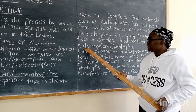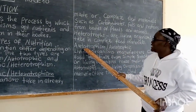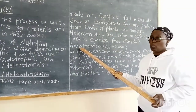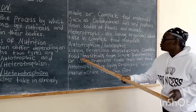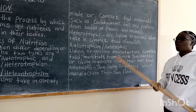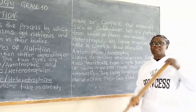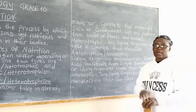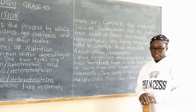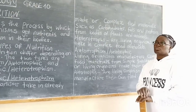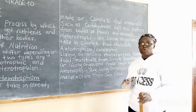The second category is autotrophism. This is also a way or a mode of feeding where living organisms manufacture complex food materials from simple substances. We can say that living organisms make their own food. The living organisms that normally make their own food are plants, some bacteria, and a type of algae. For autotrophism, the living organisms manufacture their own food.